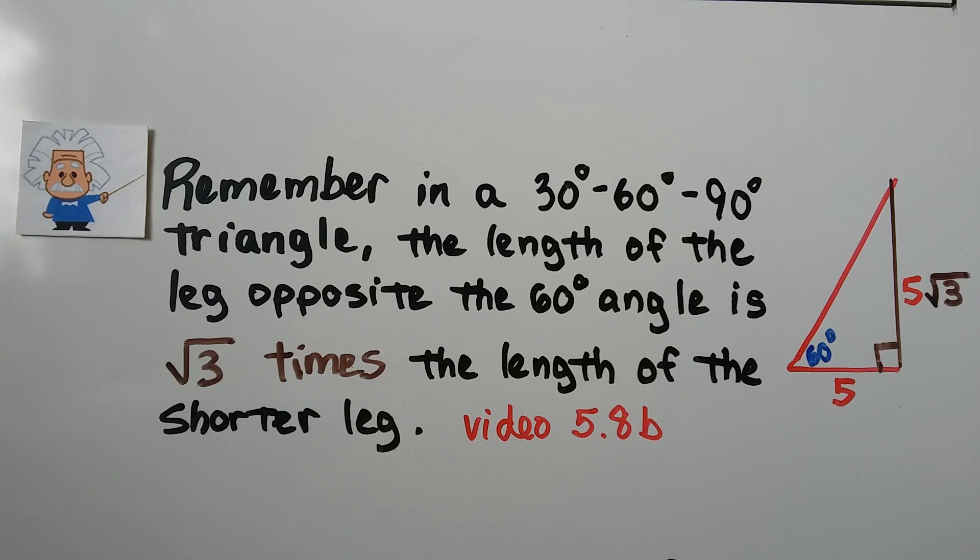Now when we're trying to find the area of the triangle, sometimes we're going to have to split the triangle in half. And I want you to remember in a 30 degree, 60 degree, 90 degree triangle, the length of the leg opposite the 60 degree angle is square root of 3 times the length of the shorter leg. So we could find our height, it's 5 square root of 3. And that was in video 5.8b, if you missed it, there'll be a link for that too.